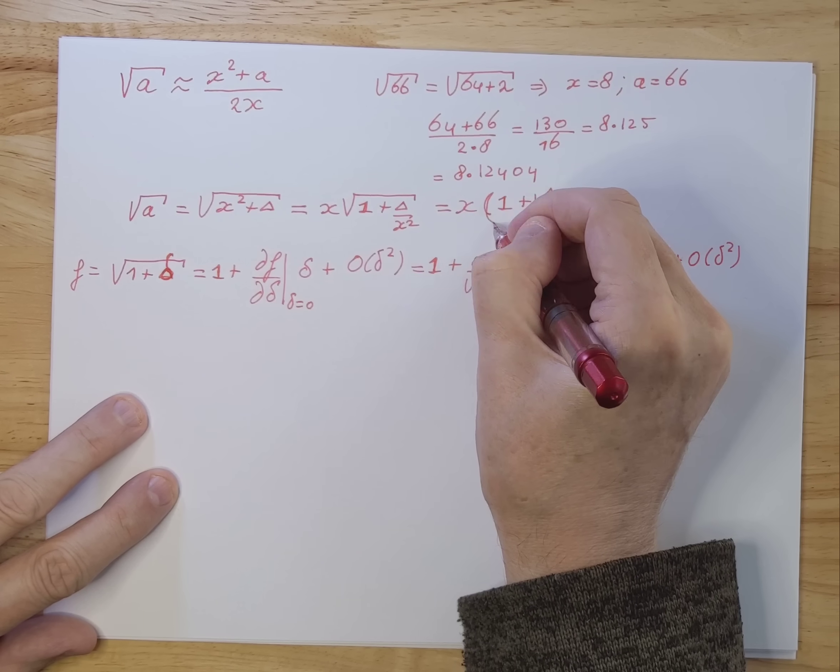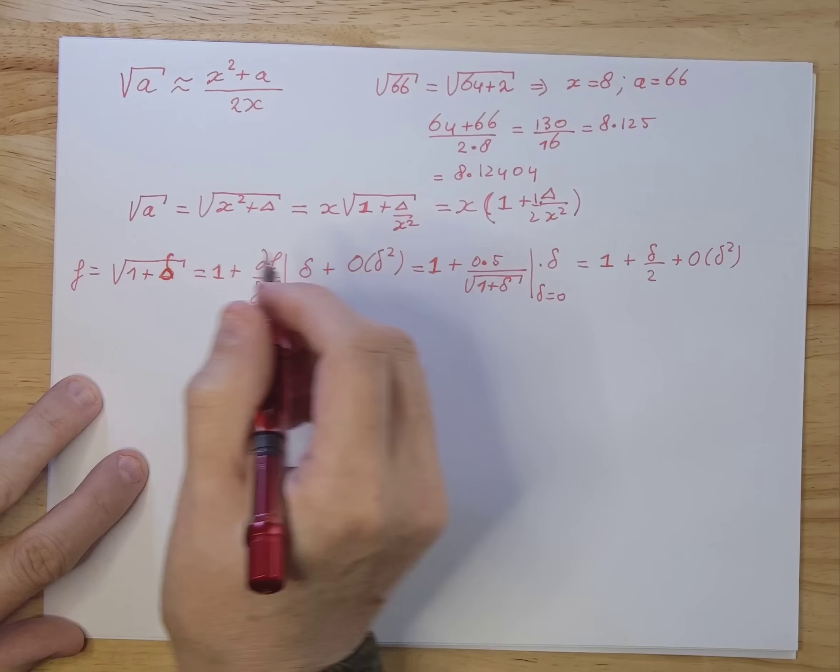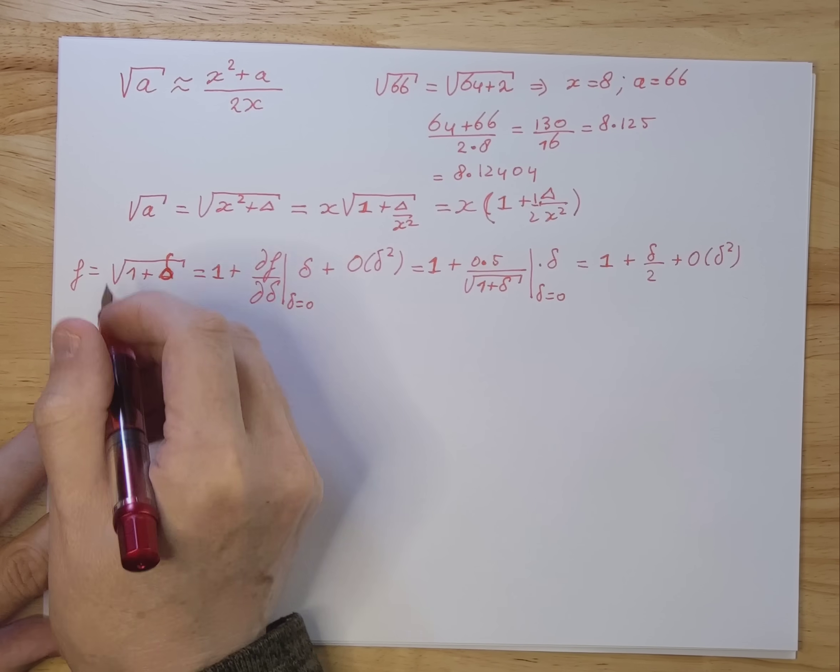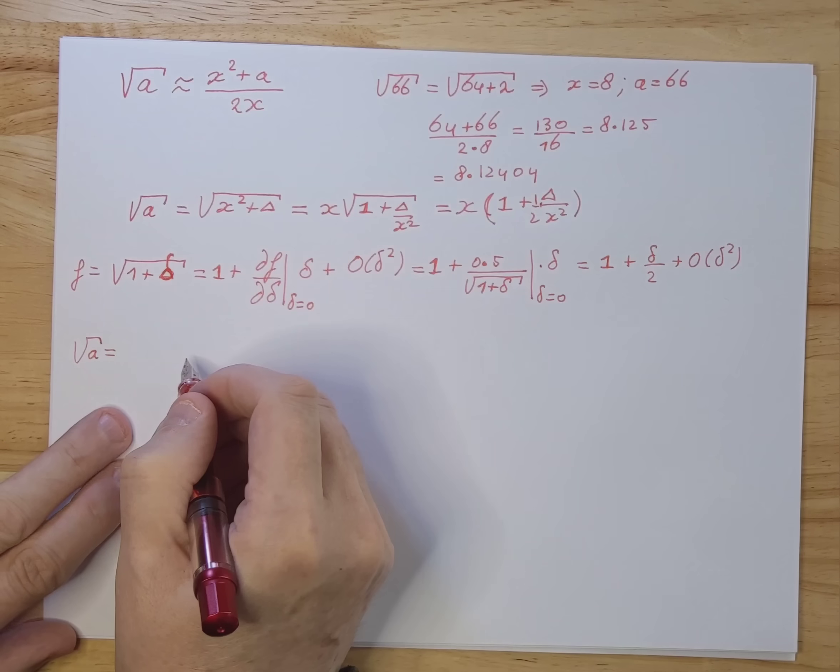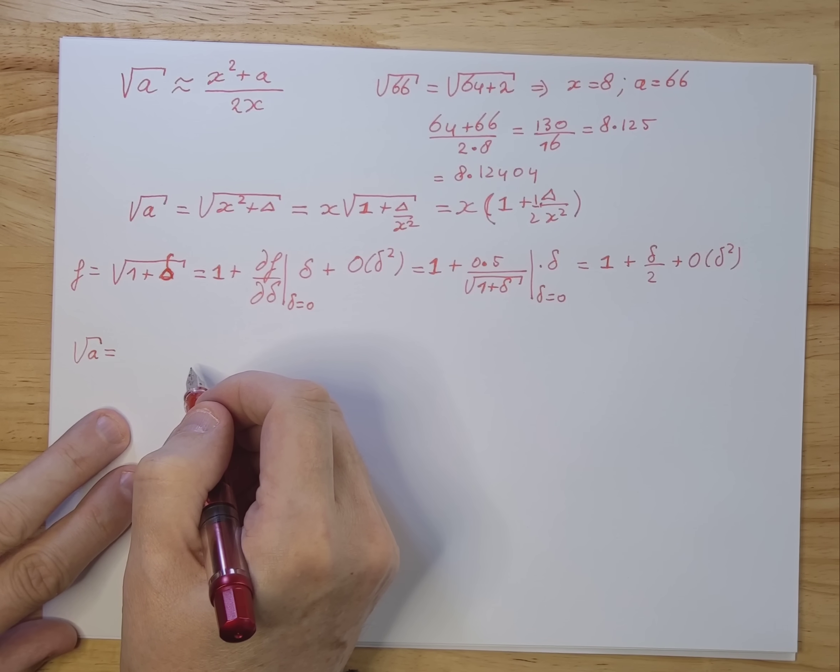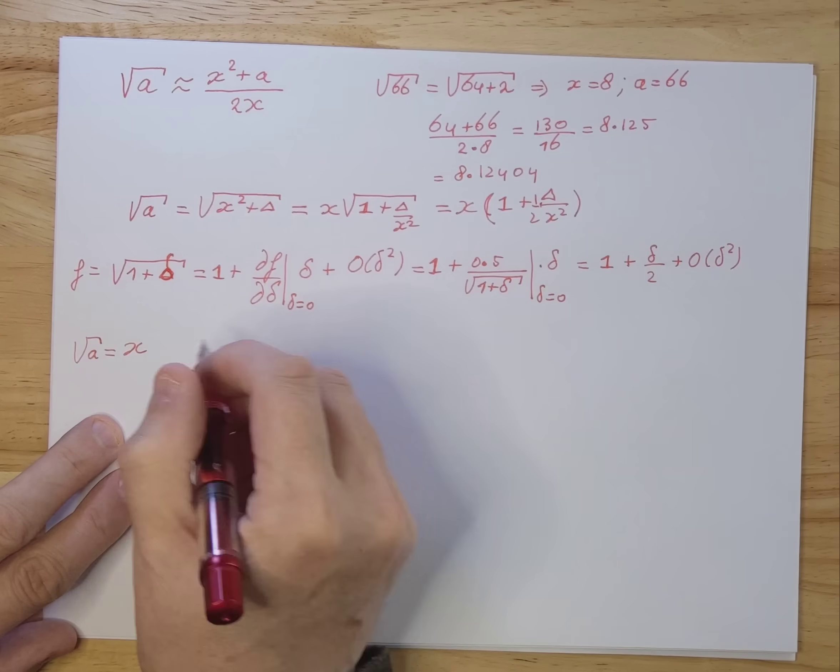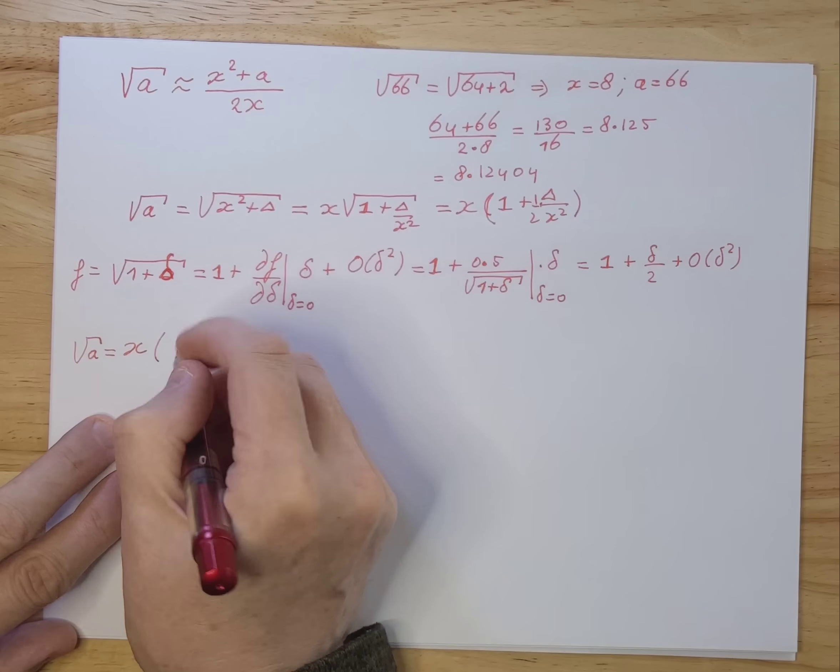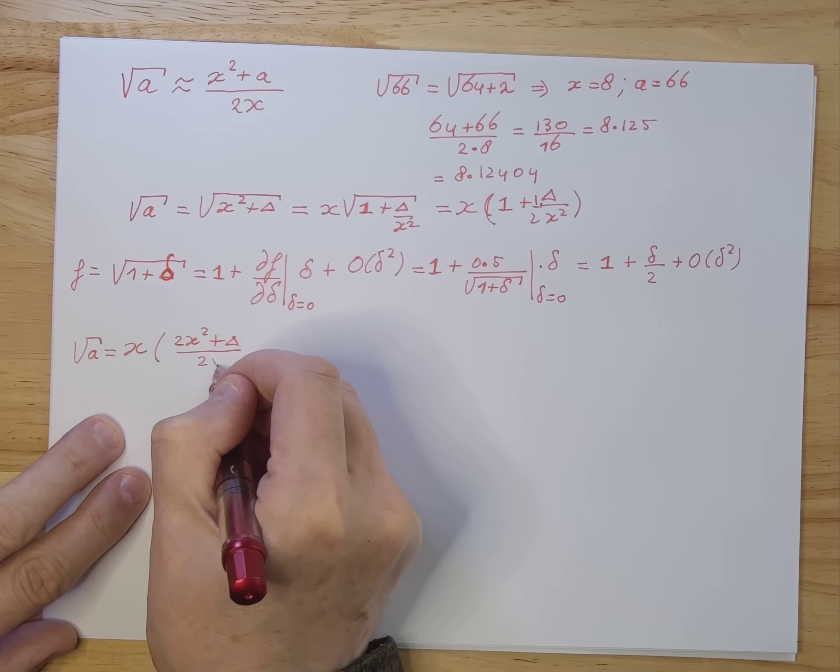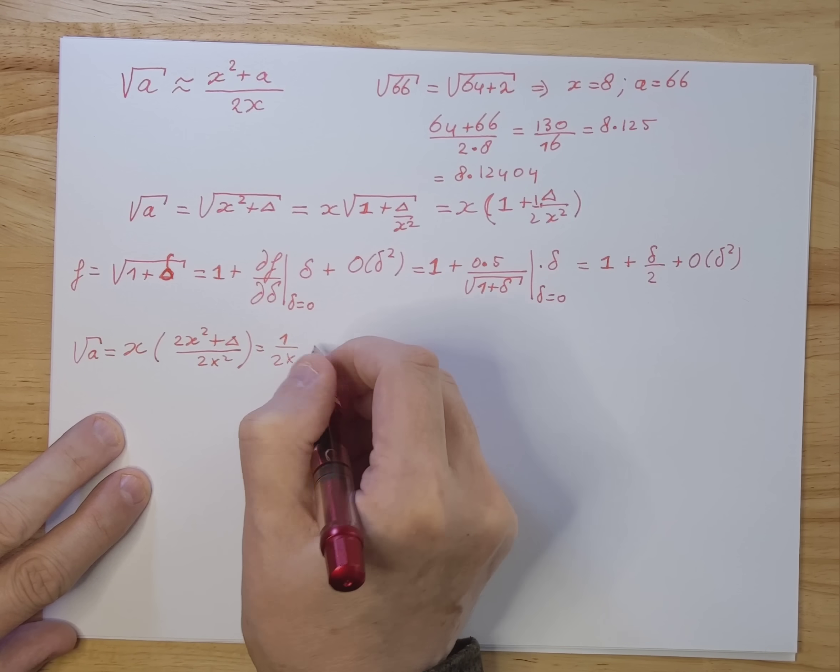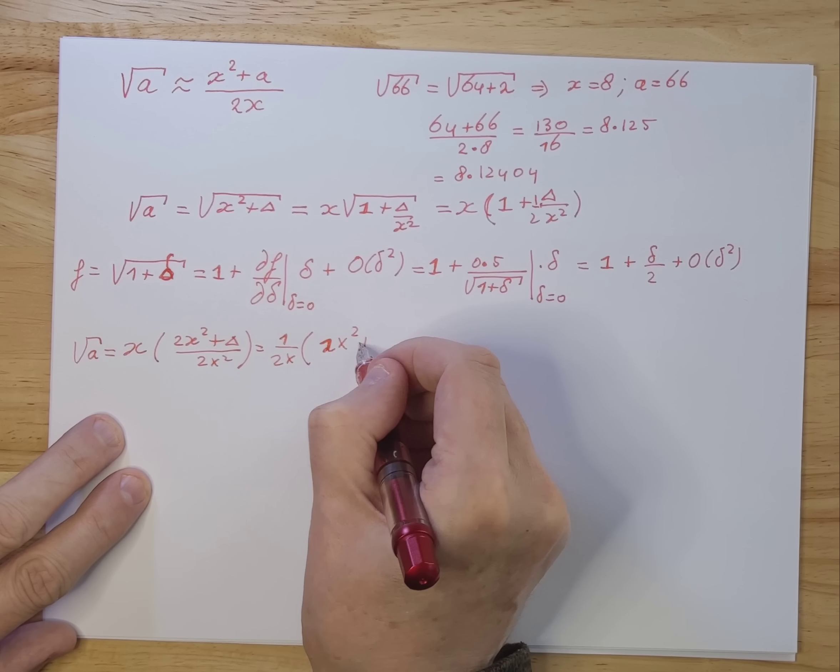And that's the result. So now we can actually work this out a little bit more. Let's do that over here. So we get our square root of a is now nothing more than x.